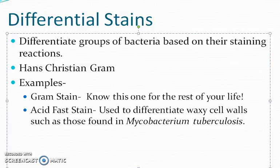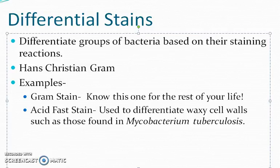Using an acid-fast stain is a great way of differentiating a mycobacterium from other bacteria that may be gram-positive staining rods. Differential stains are important, and I'll talk about the gram stain and the acid-fast stain separately.